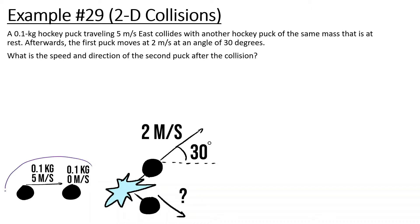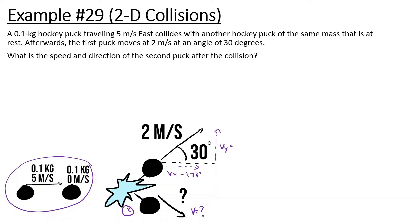So that's the scenario. Then a collision happens. Afterward, the first puck moves at 2 m/s at an angle of 30 degrees. What is the speed and direction of the second puck after the collision? Whenever we have something moving at an angle, it's a good idea to find the velocity in the x and y directions. So 2 times cosine of 30 gives us 1.73 m/s, and the velocity in y is 1 m/s.